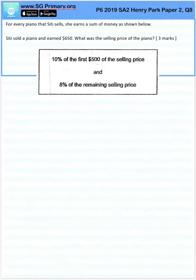Question 8. For every piano that Citi sells, she earns a sum of money as shown below. Citi sold a piano and earned $650. What was the selling price of the piano?